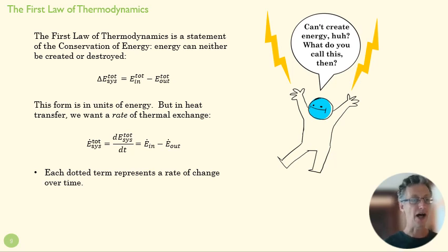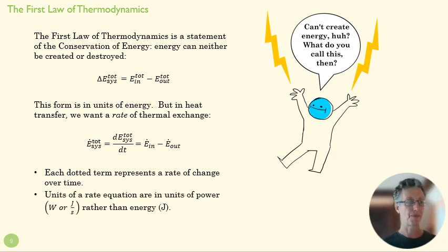So each dotted term represents a rate of change over time. So that's telling us how much energy per unit time is coming into the system, how much energy per unit time is going out. And then this term is the change in the energy of the system per unit time. And the units here are no longer in energy, they're not in joules, but they're in watts, joules per second.